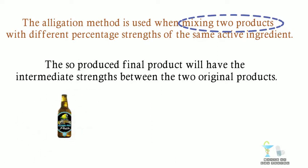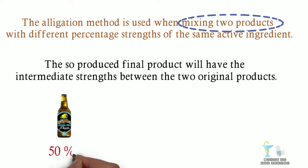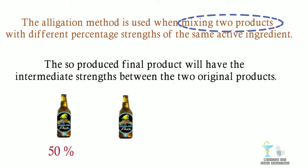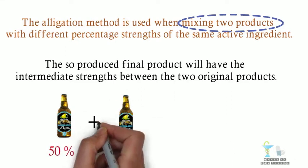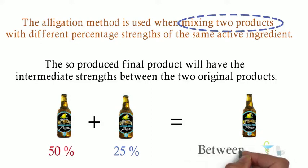Just for understanding, we can see an example. We have 50% and 25% alcohol and if we mix it, we will get the product alcohol with the percentage which falls between 25 and 50, which means the product strength of alcohol would be 30, 40 or 45, not more than 50 and not less than 25.